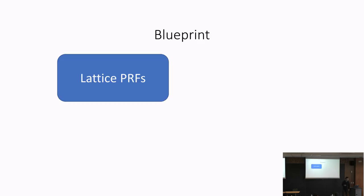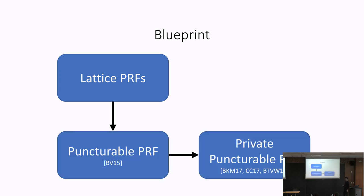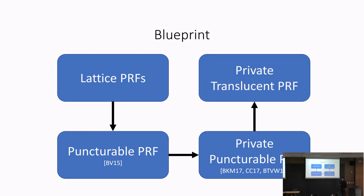The high-level blueprint for the final part of the talk is as follows: first, I will review how to build pseudorandom functions from standard lattice assumptions. Then from there, we will build a puncturable PRF, then a private puncturable PRF, and finally the private translucent PRF, proceeding in a sequence of stages.